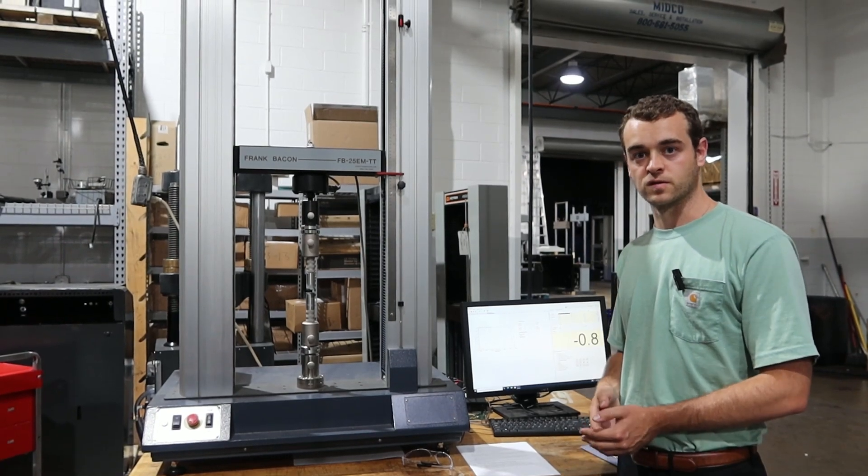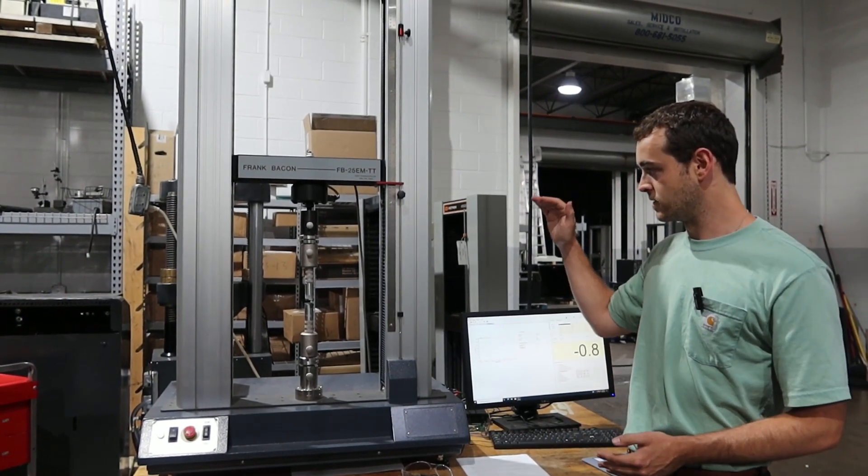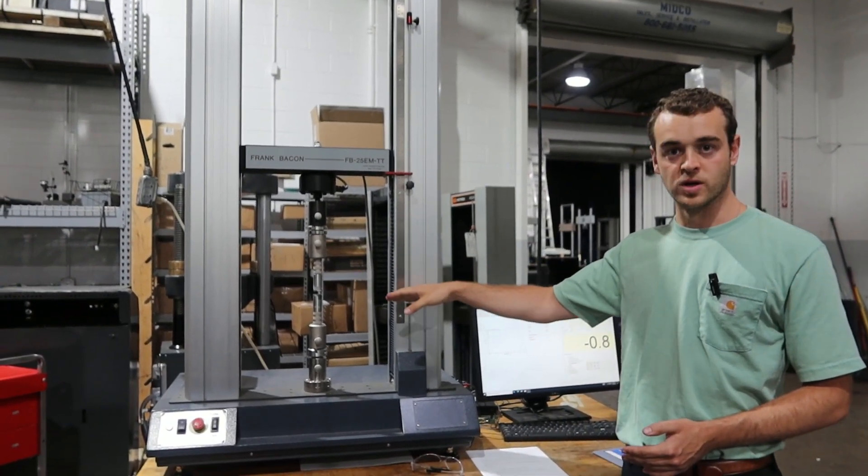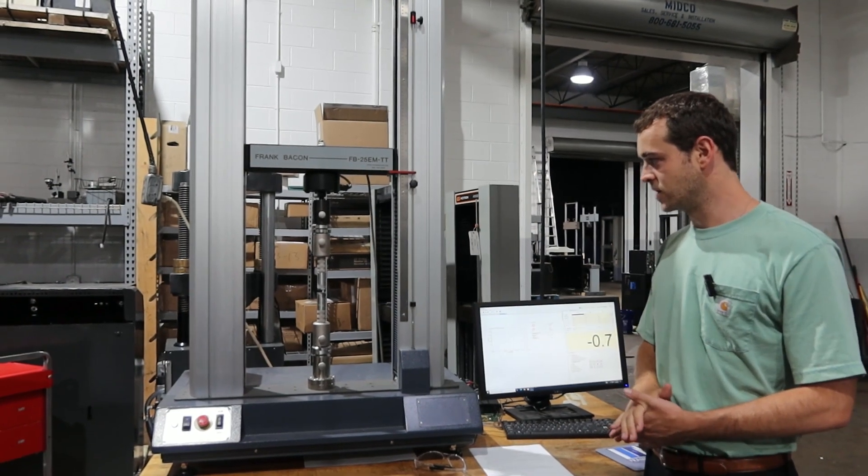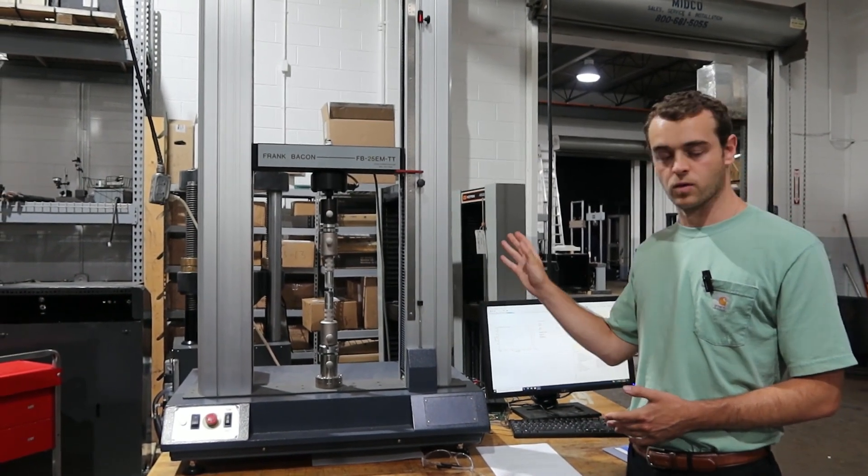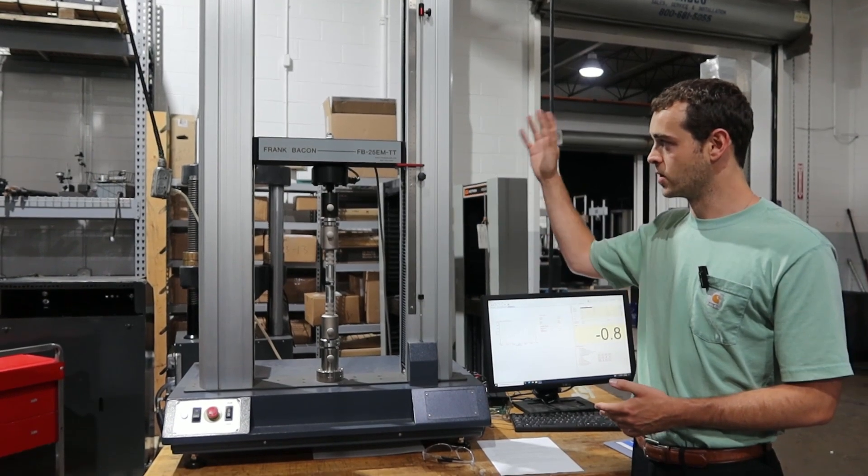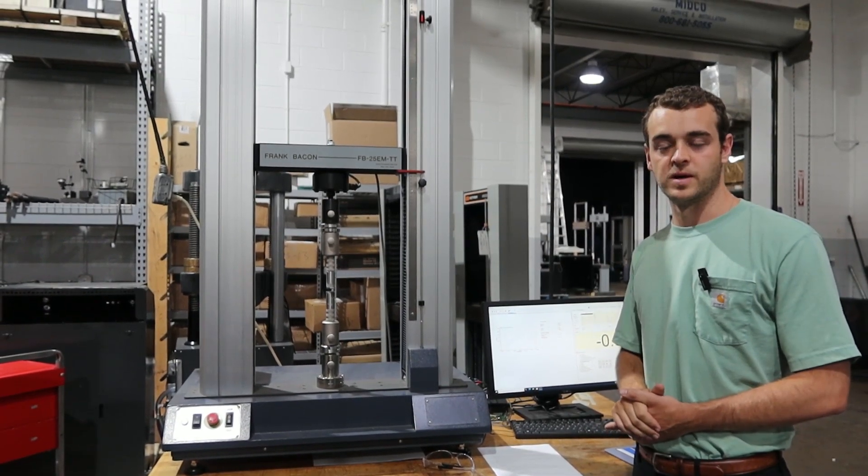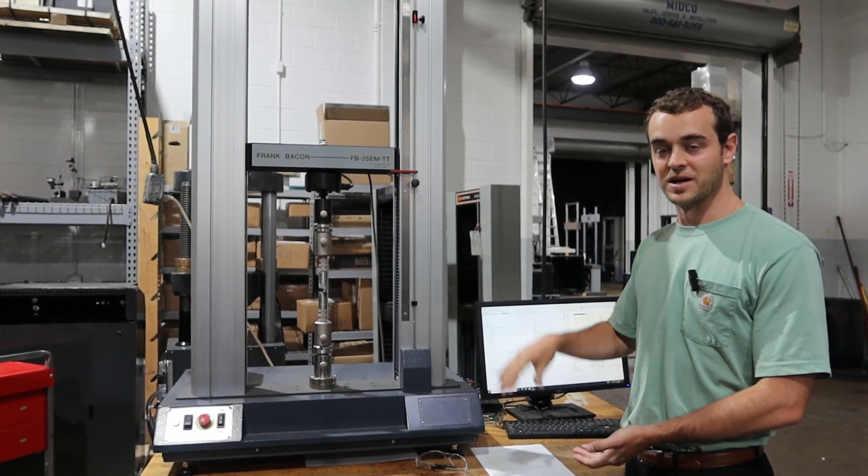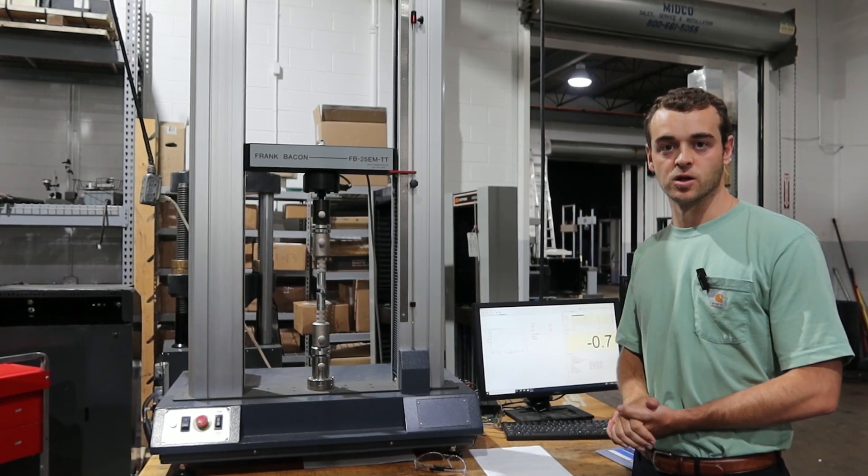So for ASTM C633 we can give you a full setup here with the appropriate tooling. Most of the time this tooling doesn't need to be rated anything over 50 kilonewtons. We're doing this on a 25 kilonewton Frank Bacon machine right now, but we have done them all the way up through 100 kilonewton systems.